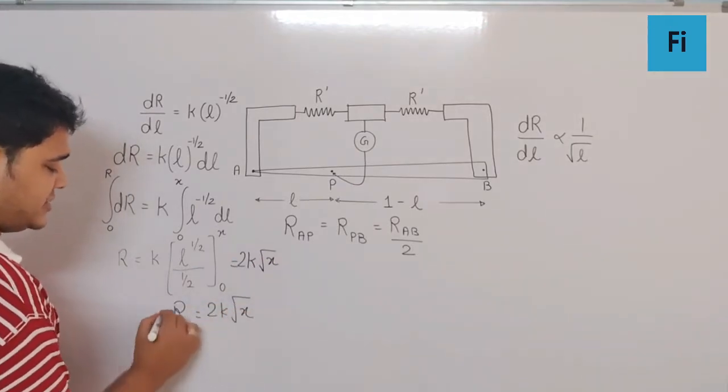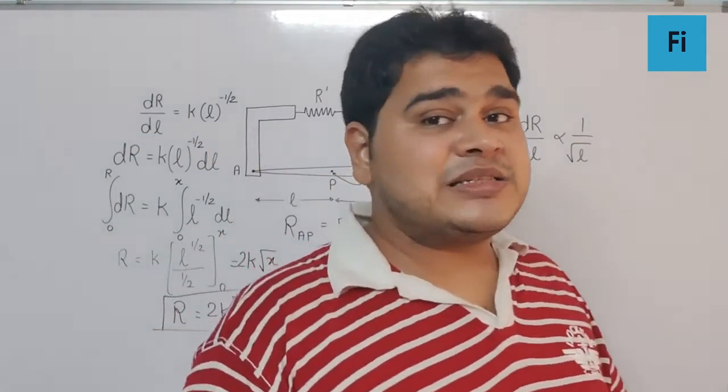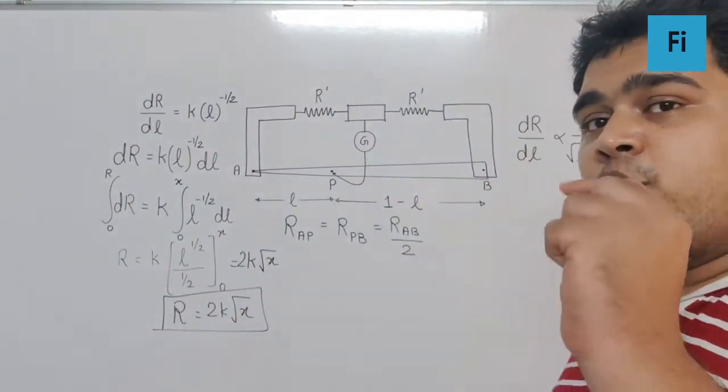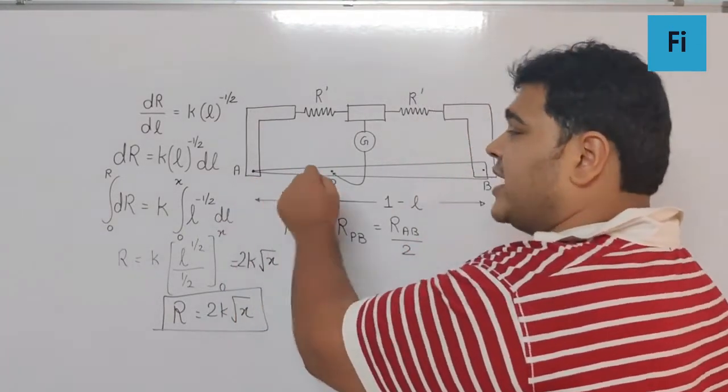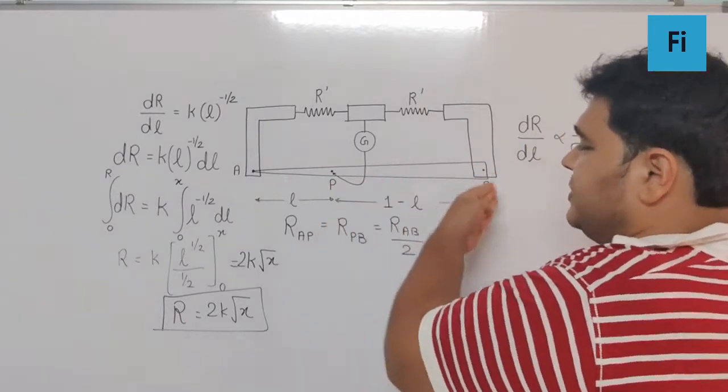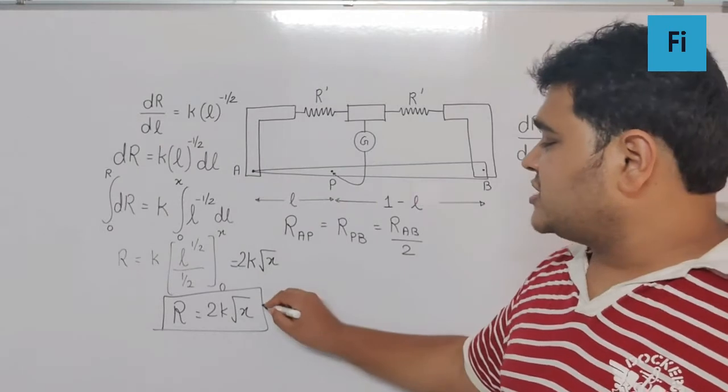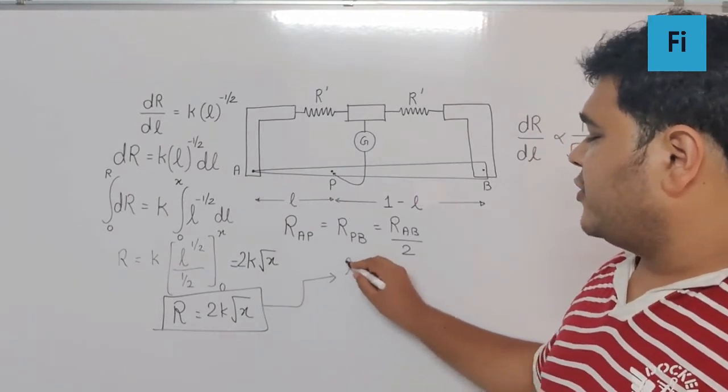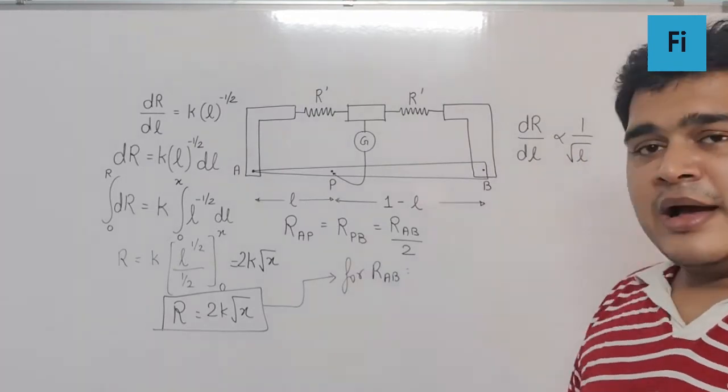Now the ending limit can be P or B depending on our usage. For this particular resistance, if I want to find R_AP, I can say the value of x is actually L.